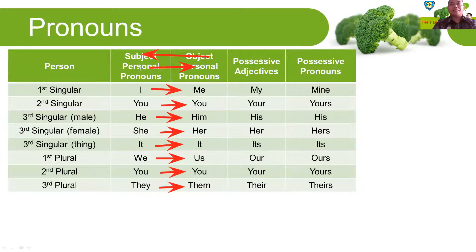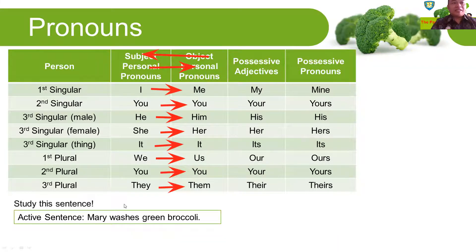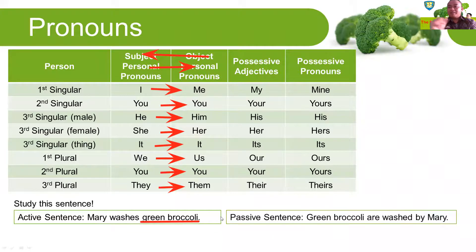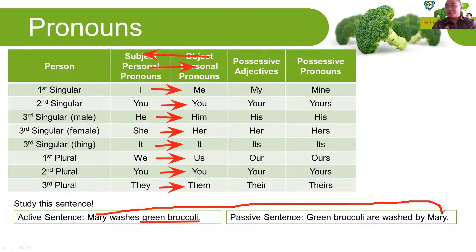Now look at this active sentence: Mary washes green broccoli. First, in this sentence, we need to know the number of the objects. Green broccoli in English is treated as a plural noun because broccoli is an uncountable noun. So in this sentence, we are going to use broccoli as a plural noun. Then, moving to the passive sentence: Green broccoli are washed by Mary.